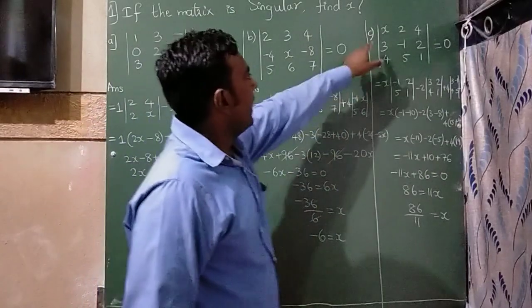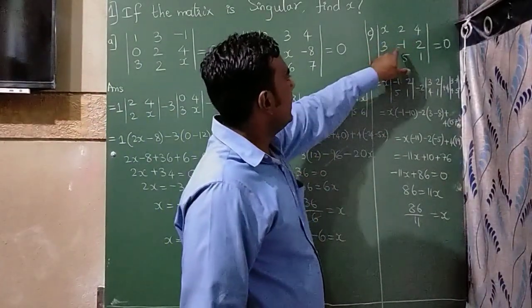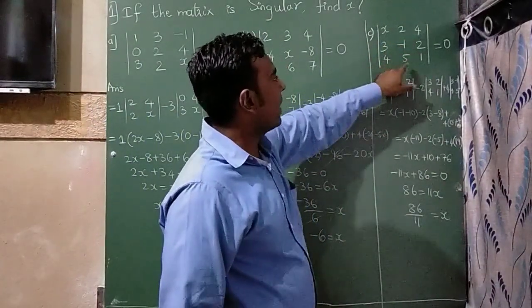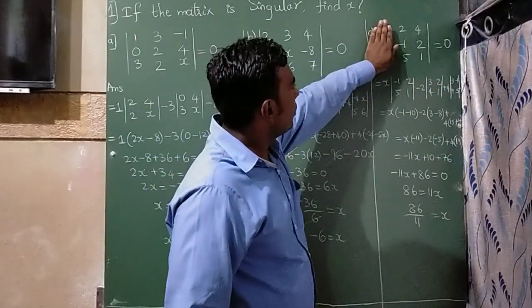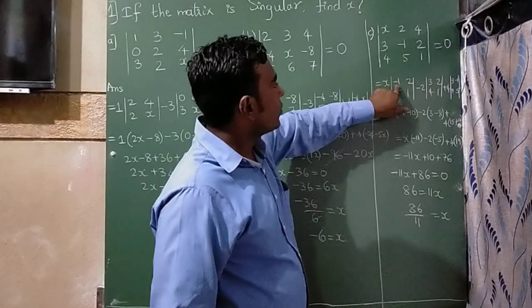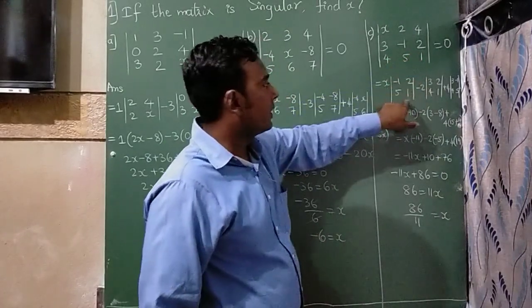Third question: matrix x, 2, 4, 3, -1, 1, 2, 4, 5, 1 equals 0. So, x I have written as it is. If I close this column, I can write -1, 2, 5, 1 here.